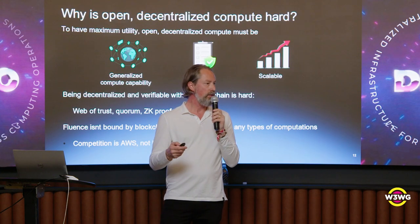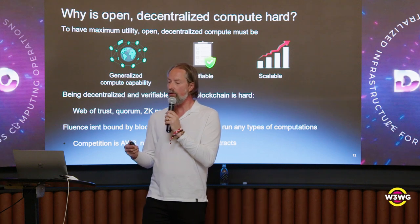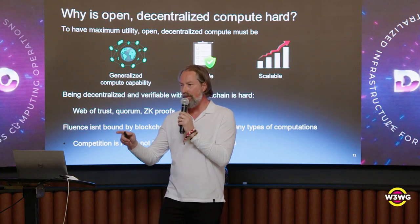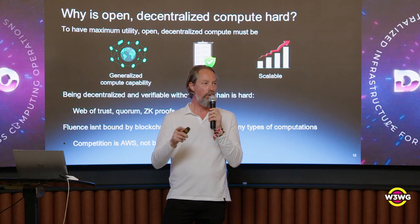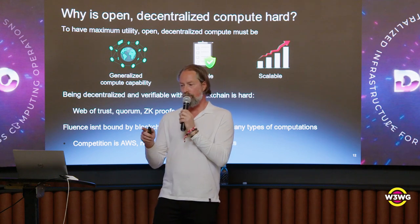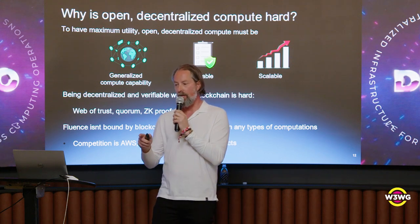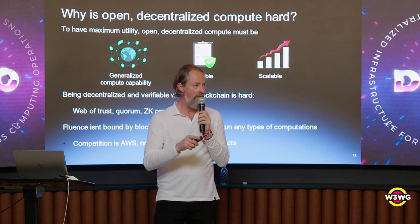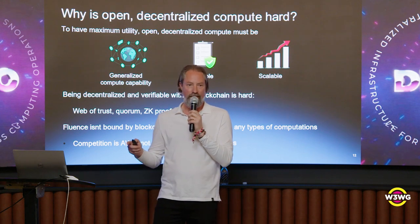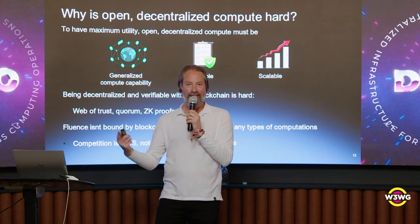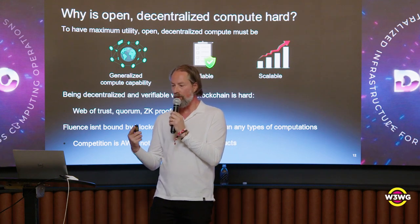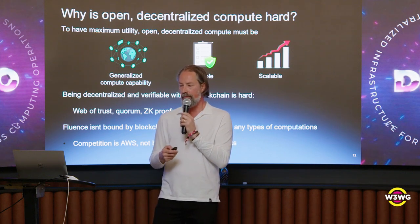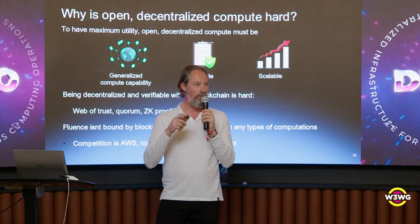Why aren't we there now? Why hasn't this happened? It's because it's hard. You want to have generalized compute capability with verification and scalability, and those three things are very hard to do together. For example, you have verifiability on blockchain, but you don't have scalability and you don't have generalized compute capability. You can also have generalized compute capability easily decentralized, but with no verification — that's also not ideal. Putting and wrapping these three things together is what you need, and that's very hard. We've solved the verification without blockchain through a variety of different methods.